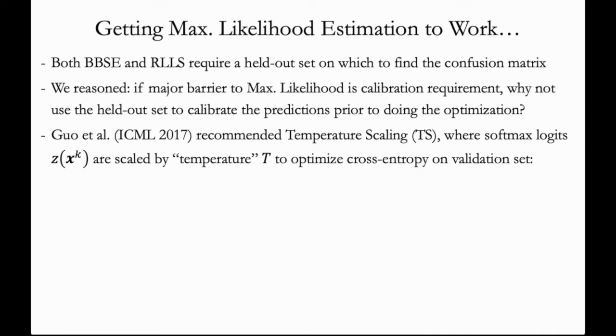Google and others in 2017 recommended an approach called temperature scaling for deep neural networks, where the softmax logits, which we denote with the letter Z, are scaled by a temperature parameter T to optimize cross entropy on the validation set. And the formula for temperature scaling looks like this.